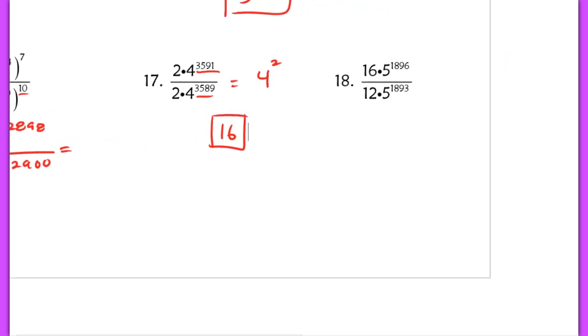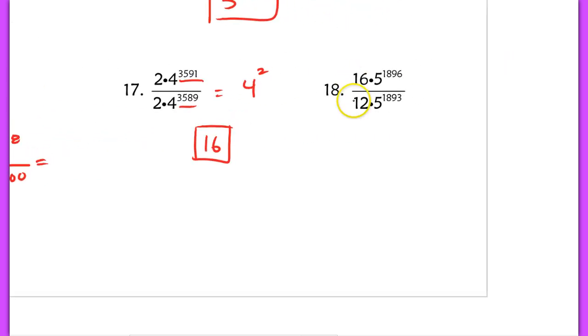In number 18, let's use our rules here. We have 16 over 12. Well, I know that these don't have the exact same base, but I can simplify 16 over 12 to 4/3. And then here with the 5s, I have exactly 3 more on top than I have on the bottom, so this is going to cancel and be 4³ times 5³ after I subtract those exponents. And then I'm going to just evaluate from here. So in the numerator, I have 4 times 125, so 125 times 4. Think of this as $1.25 multiplied by 4, so you have $5, or 500, divided by 3. And there's my final answer.